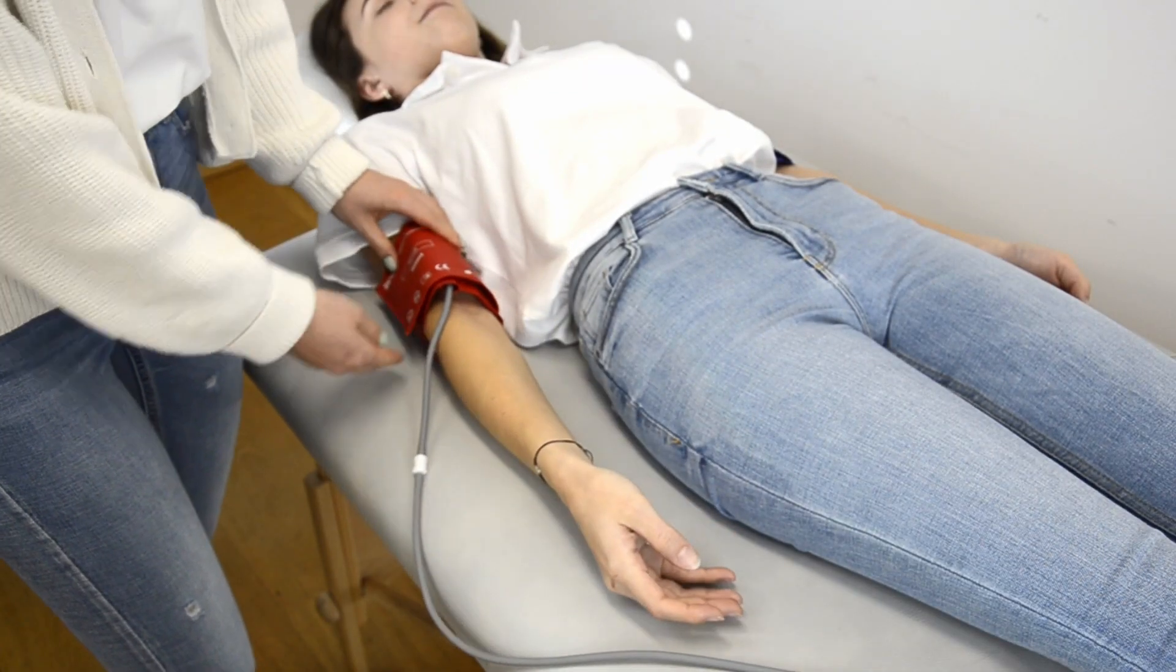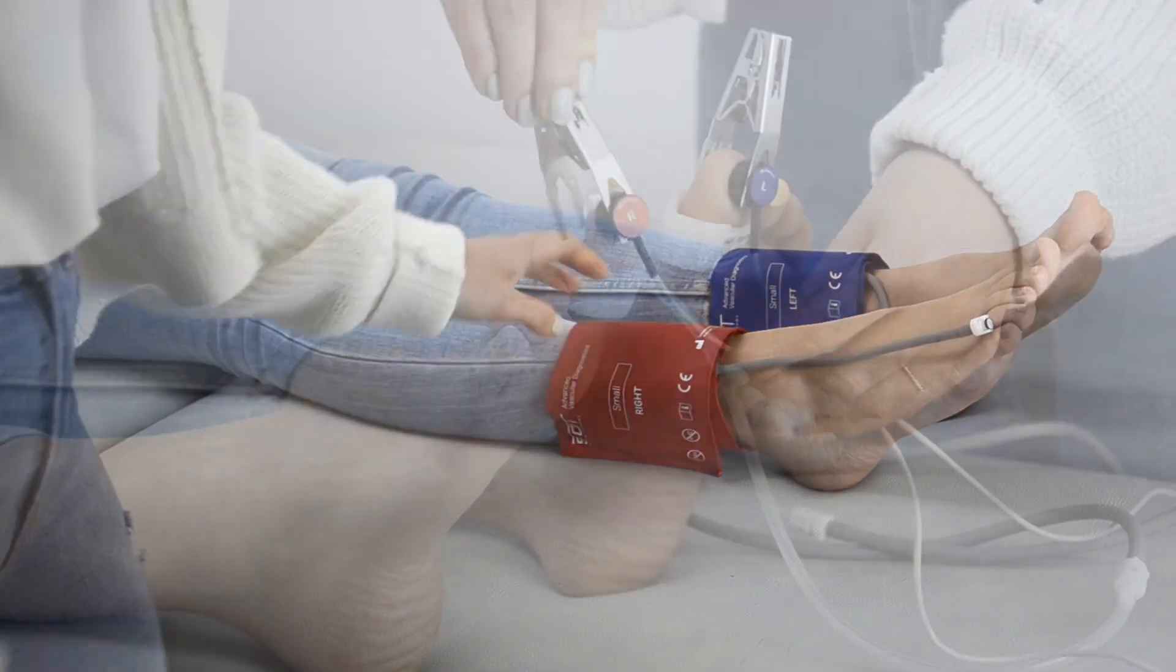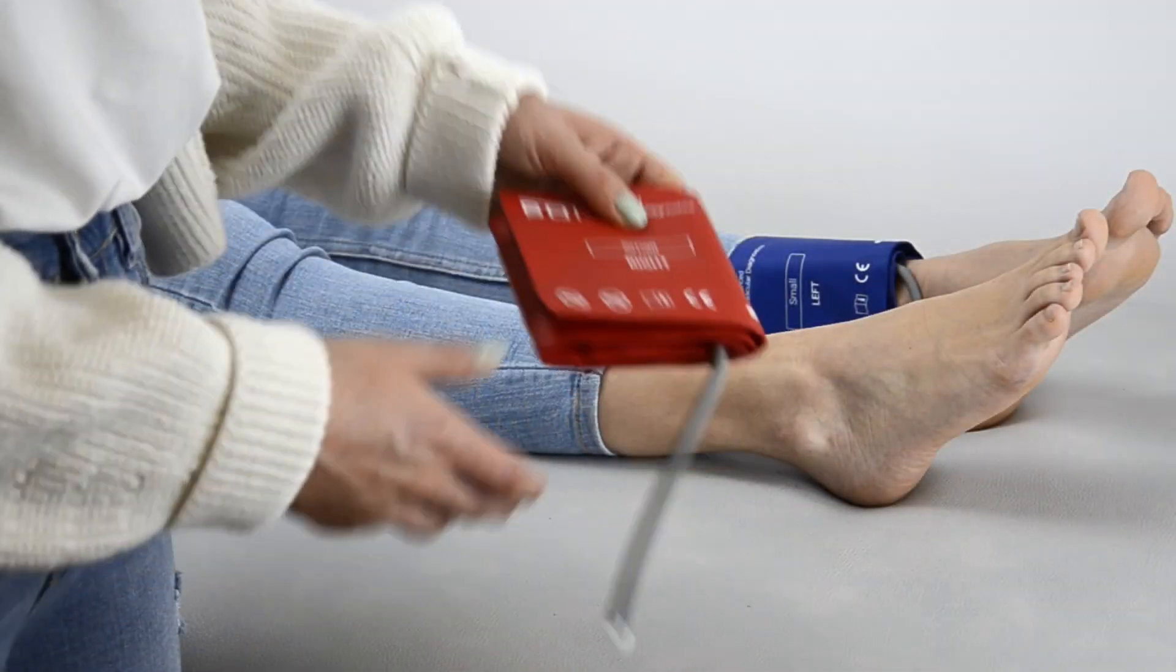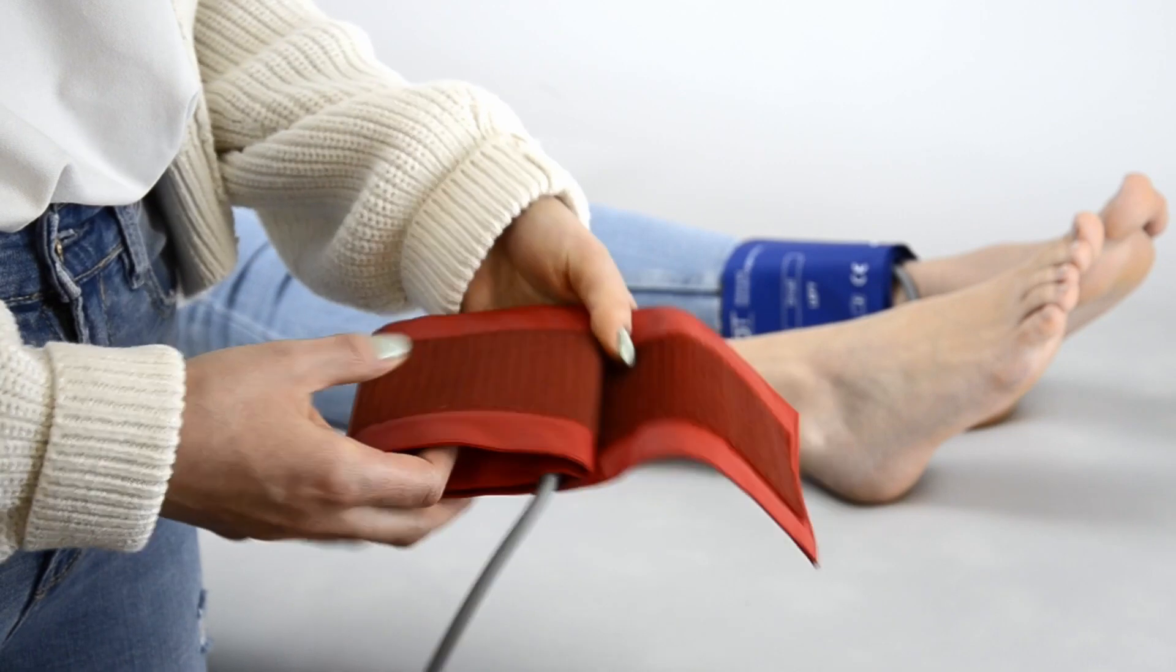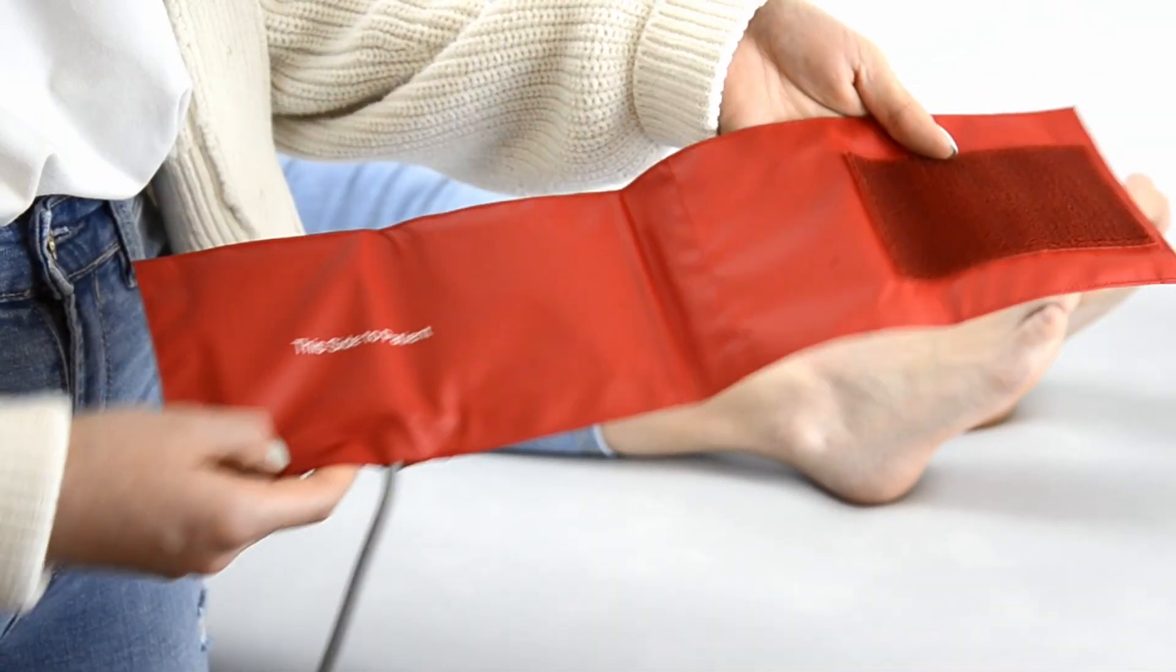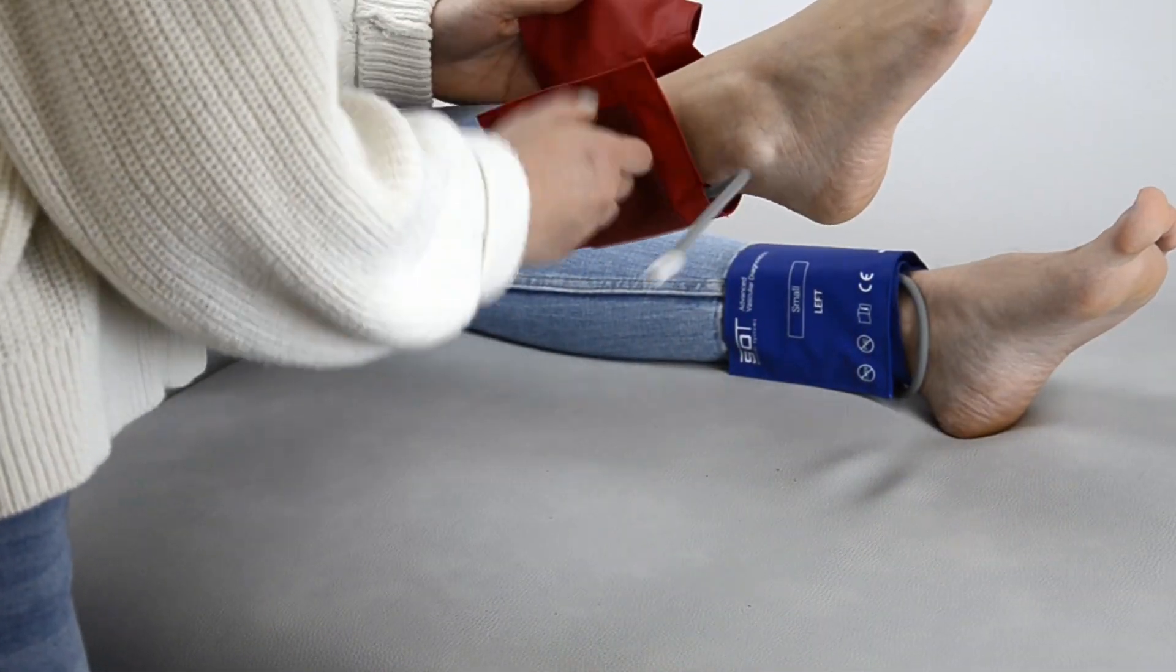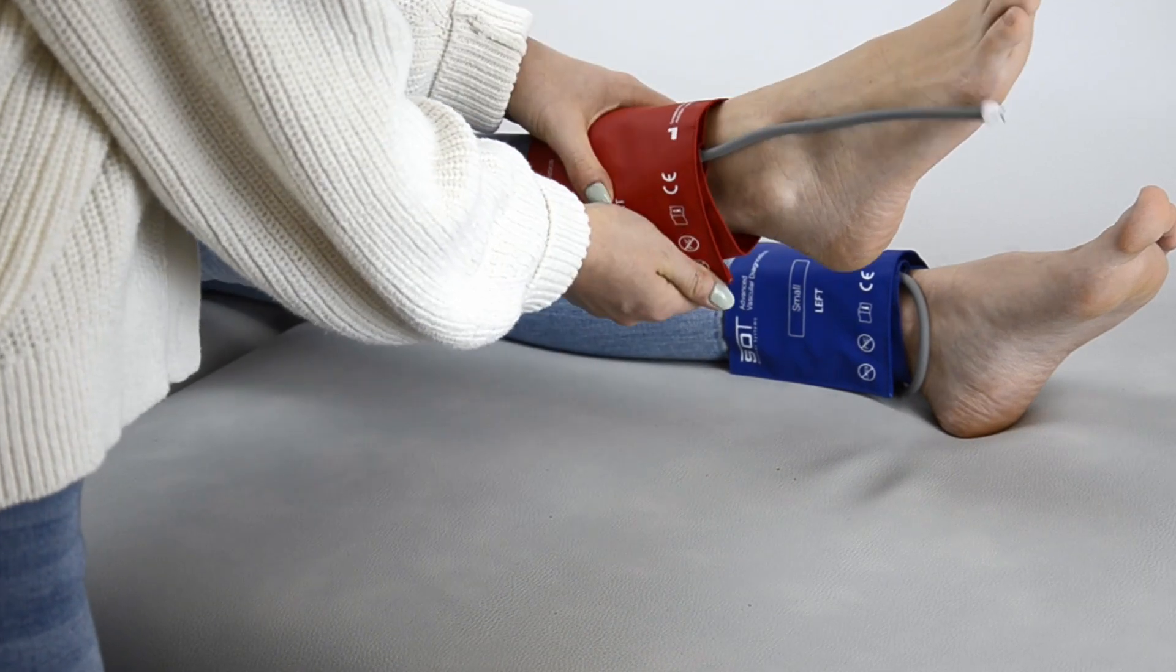This procedure has to be done for upper arms, ankles and optionally for the toes. Apply the ankle cuffs as indicated. Be sure to have the correct side of the cuff facing the patient. Make sure that the cuffs are equally tight placed on the left and the right side of the body.